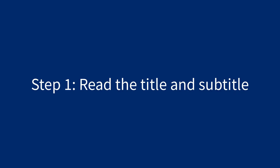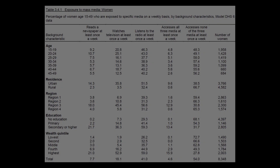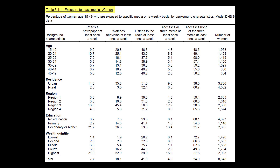Step 1 is to read the title and subtitle. They tell you the topic and the specific population group being described. The title of the table is Table 3.4.1, Exposure to Mass Media, Women. The title provides a very basic description of the information contained in the table.